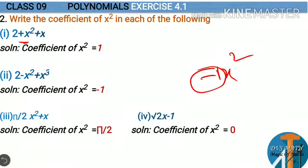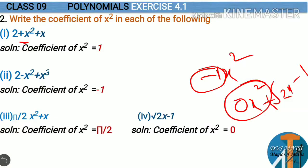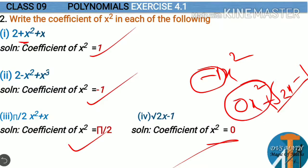Fourth expression: root 2 times x minus 1. Here we don't have the x square term at all, so we can rewrite it as 0 times x square plus root 2 x minus 1. Anything multiplied to 0 is 0, so the coefficient of x square is 0. To summarize: first case is 1, second case is minus 1, third case is pi by 2, and the last case is 0 since there is no x square variable.